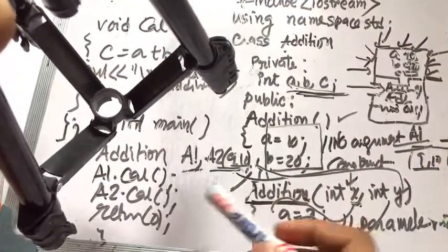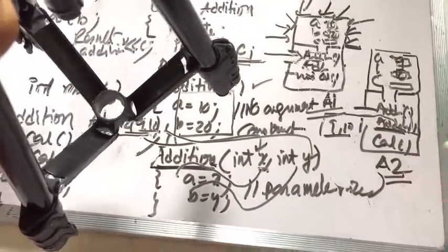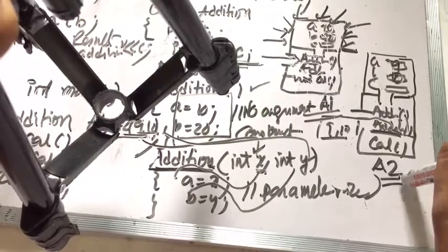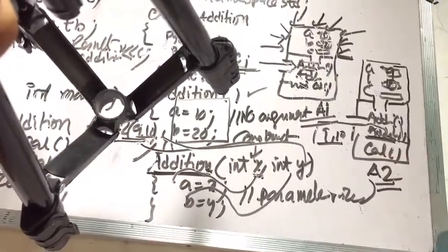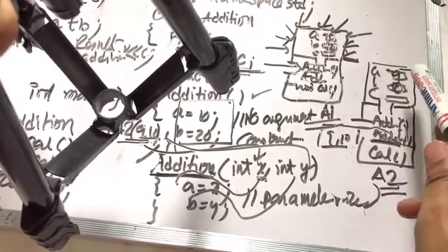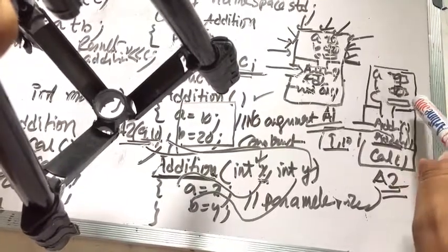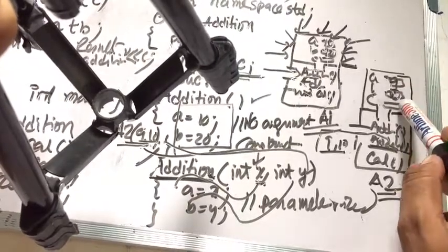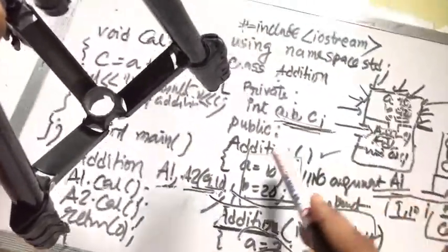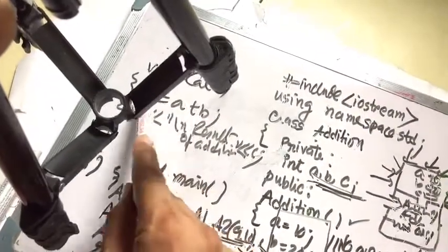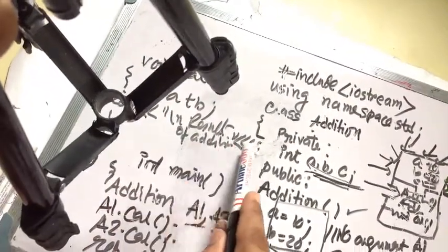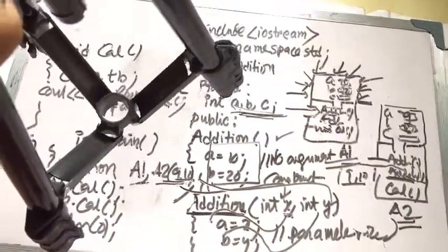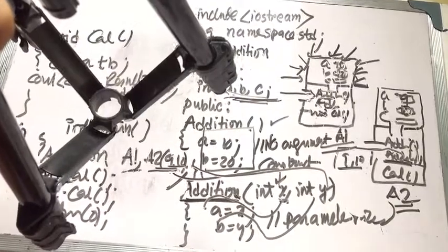When we call a2.cal, the a2 object's values are used: a is 9 and b is 10, so 9 + 10 = 19, and the result of the addition is 19.